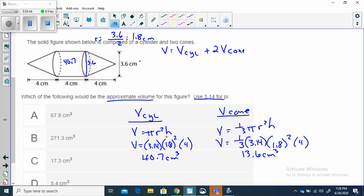The volume of our cylinder is 40.7 cubic centimeters. Then we need 2 times the volume of the cone, because each one of these cones is 13.6.